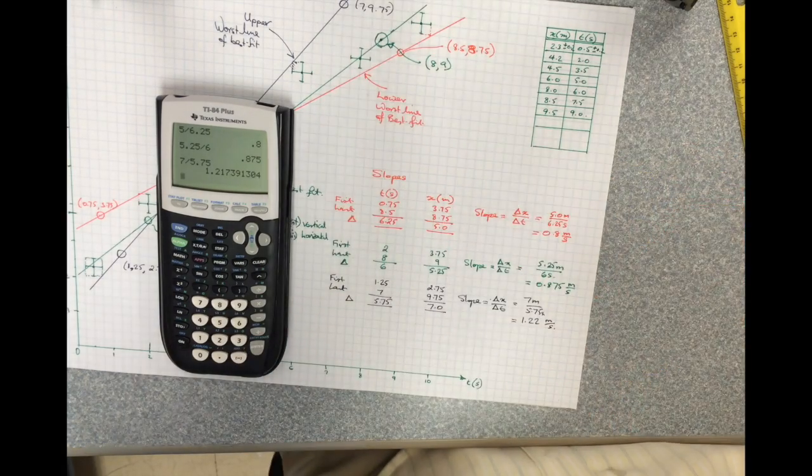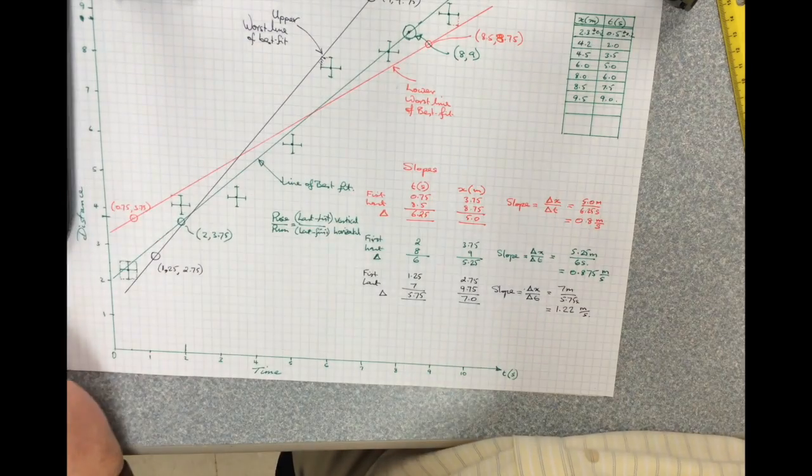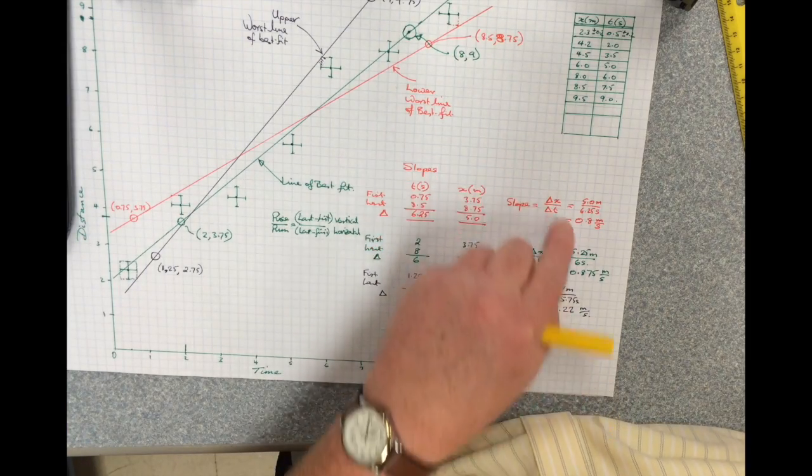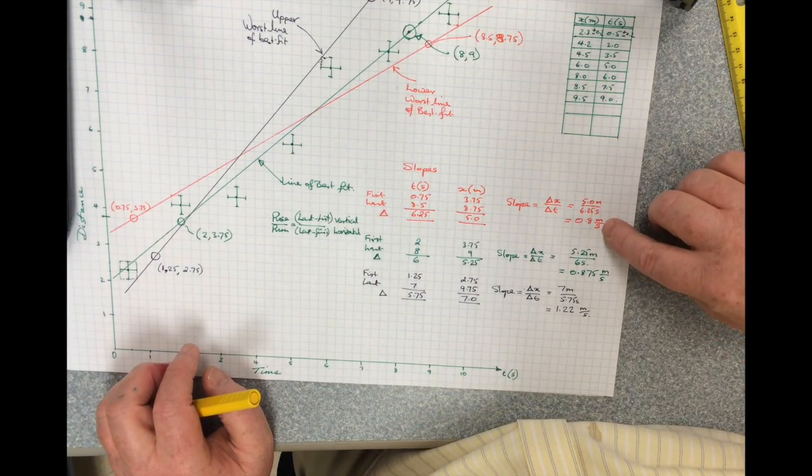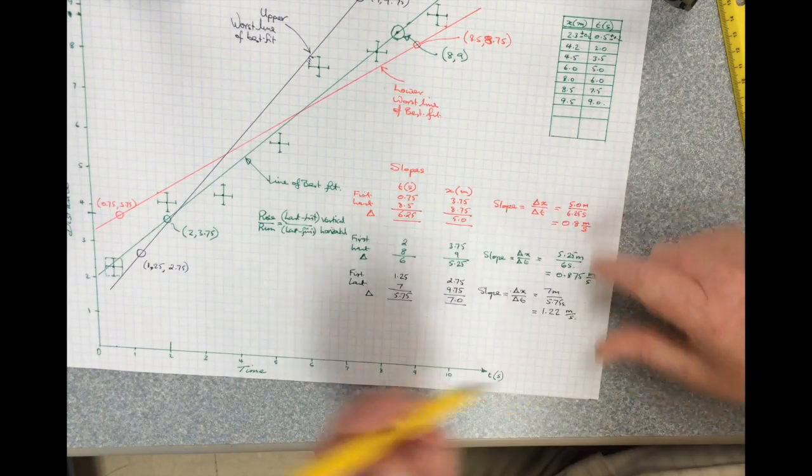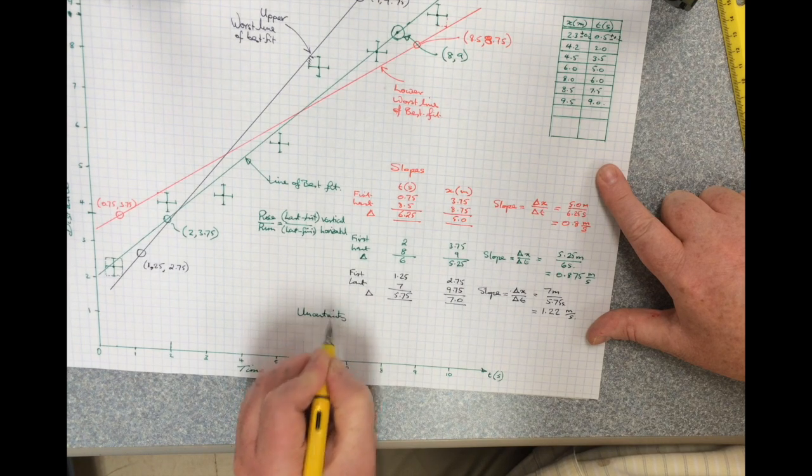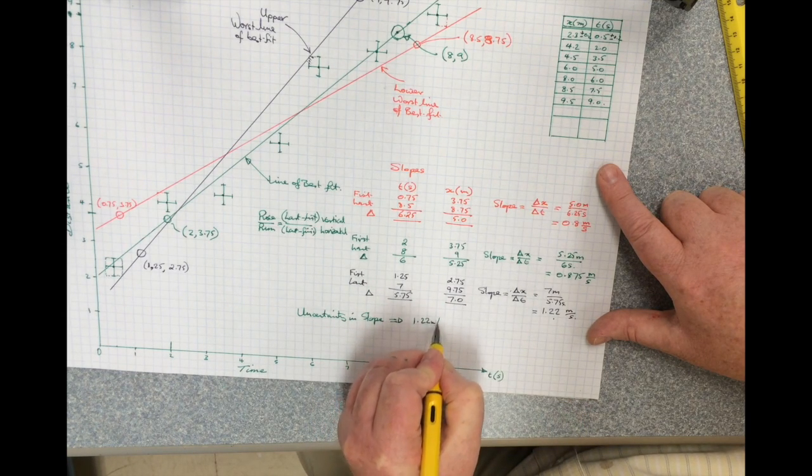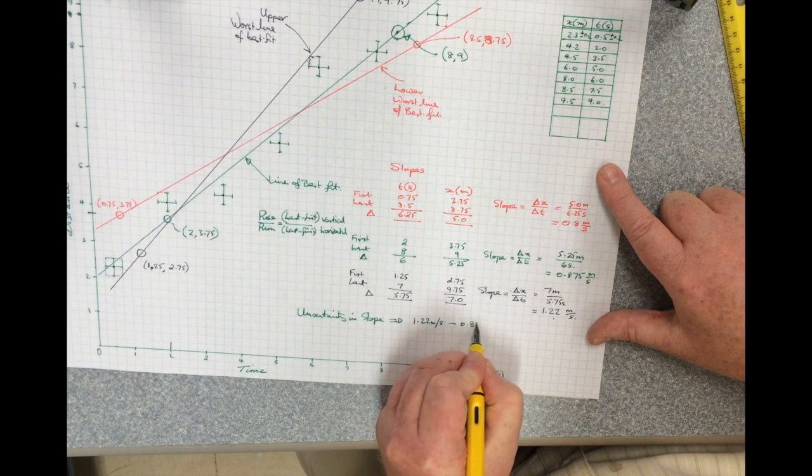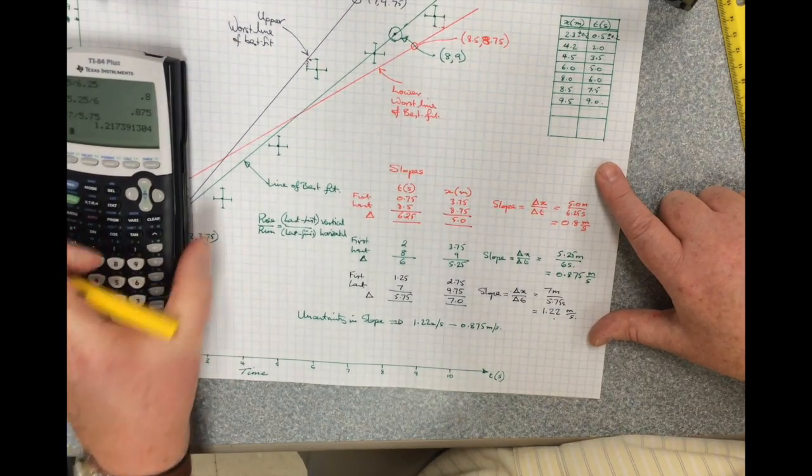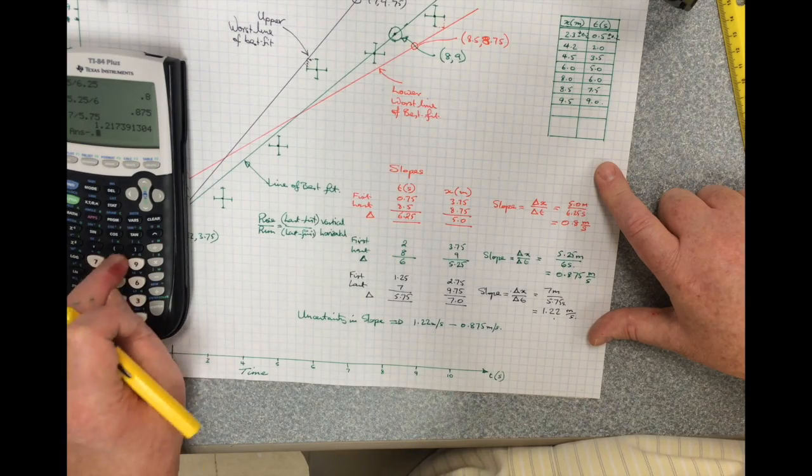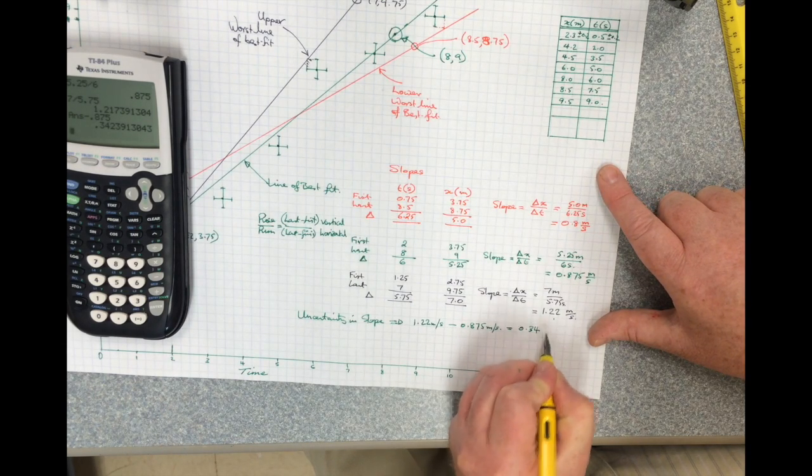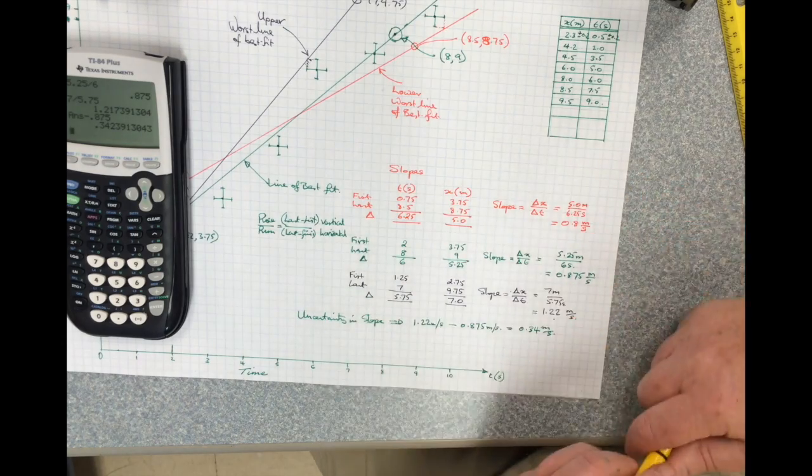Now what I want to do, in order to be quoting an uncertainty, I look at these two lines and I say, which one of these two worst lines of best fit actually has the largest deviation from our line of best fit? And it's pretty obvious that it's this one here. So in order to find the uncertainty in the slope, I'm going to take the slope of this one. It's going to be 1.22 meters per second minus 0.875 meters per second, which is 0.34 meters per second, which is a pretty big error when the median is 0.875.